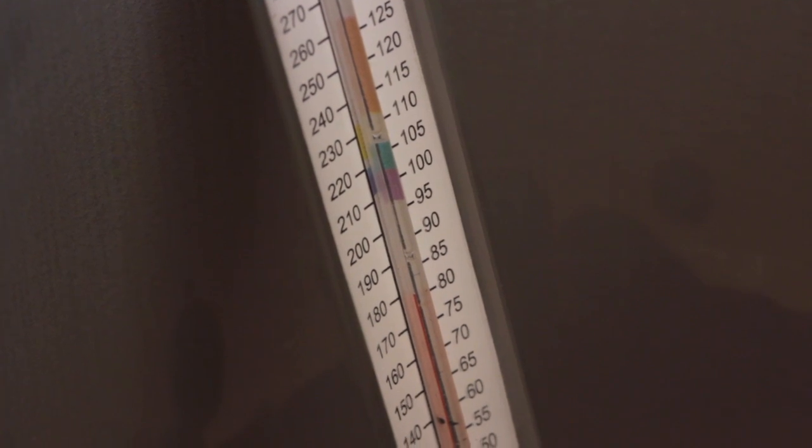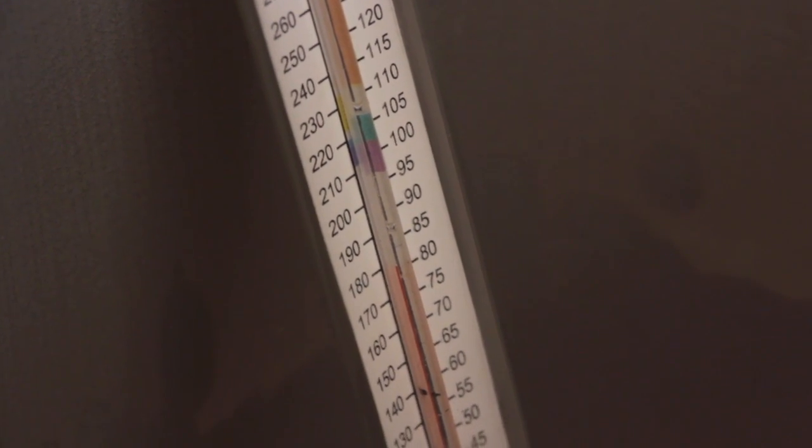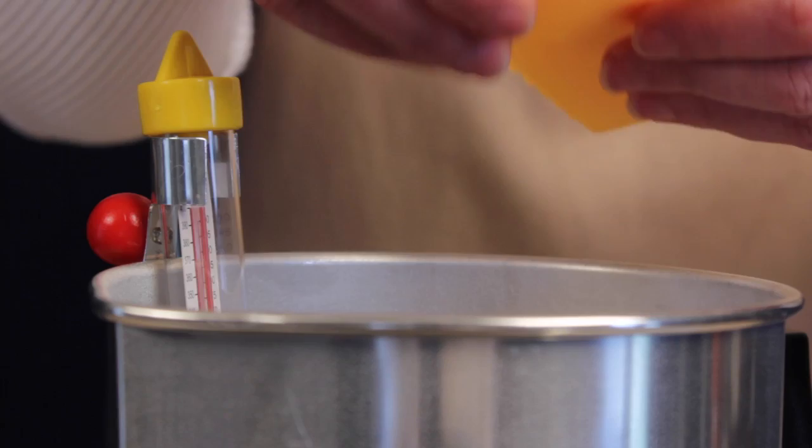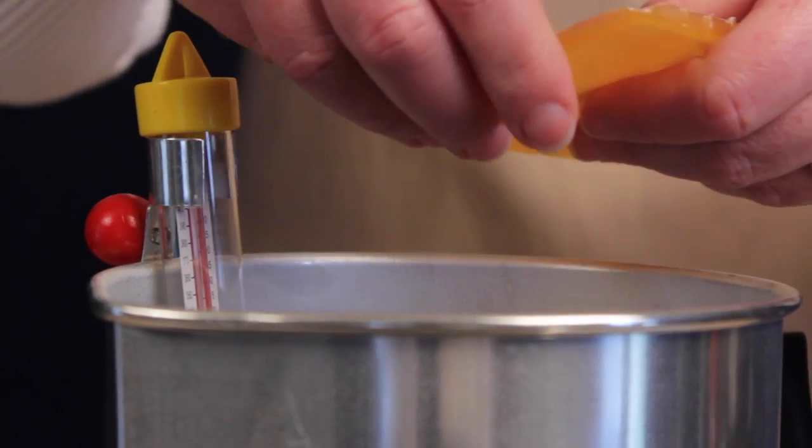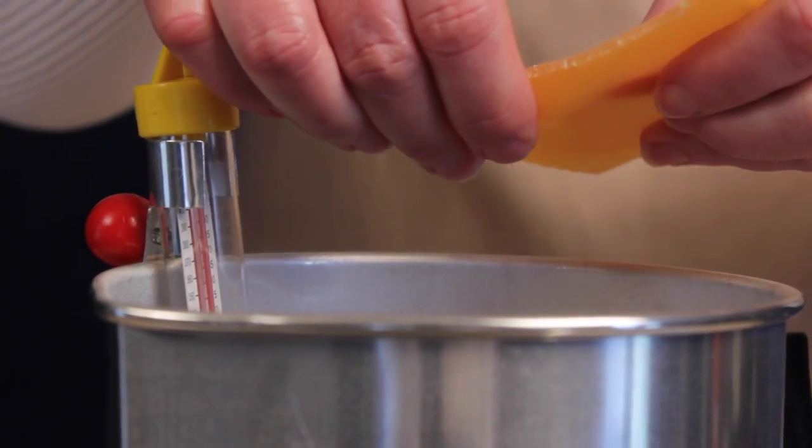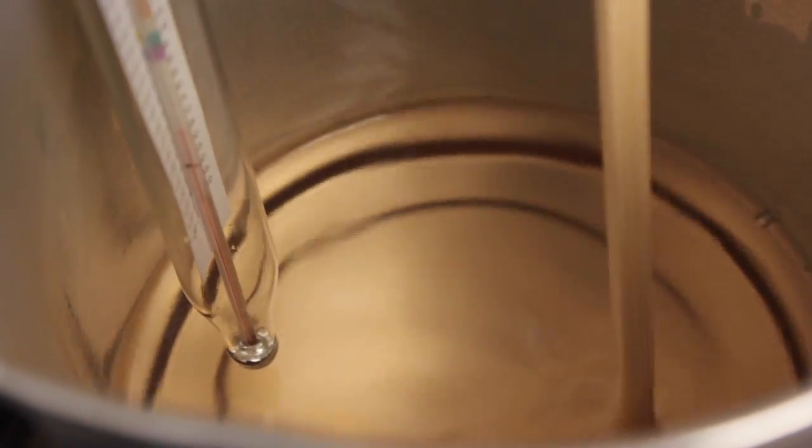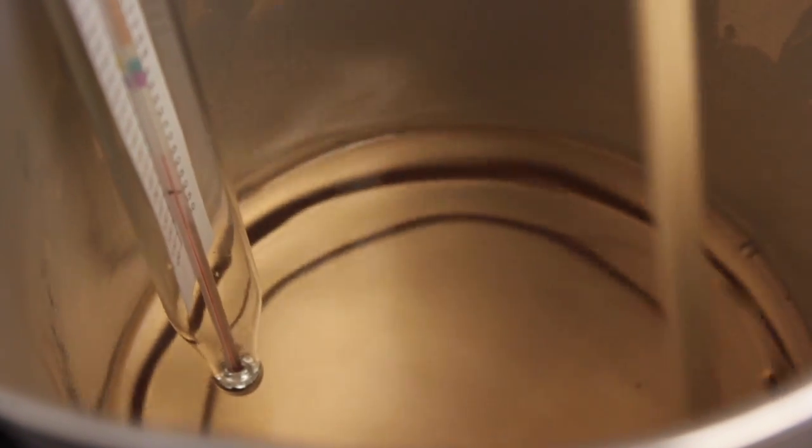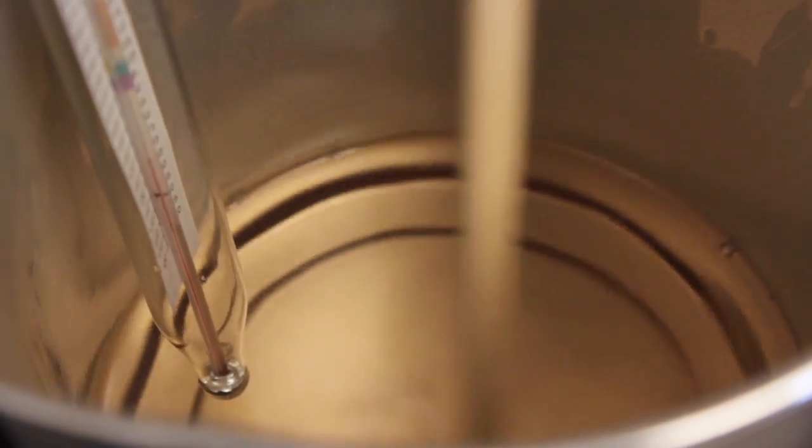Monitor the temperature of the wax. When it reaches 180 degrees Fahrenheit, break up the color and scent sheet and carefully drop the pieces into the pouring pot so as not to splash hot wax. Continue stirring until the sheet is completely dissolved and the liquid wax is of a uniform color.